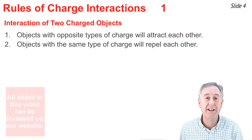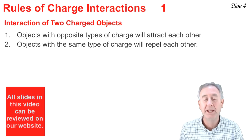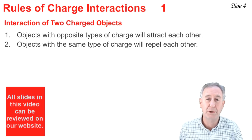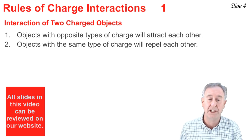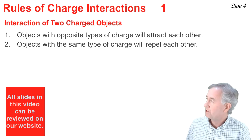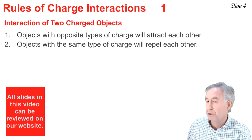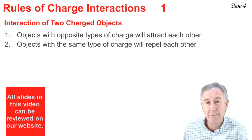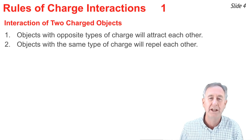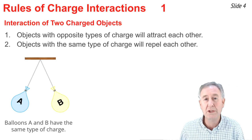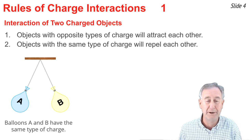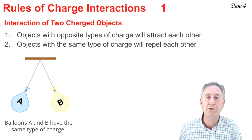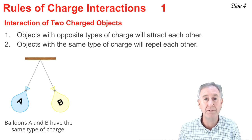You may have heard the saying that opposites attract and likes repel. This describes the first two of three rules regarding charge interactions. Objects that have the opposite type of charge will attract one another, and objects that have the same type of charge will repel one another. This diagram shows balloons A and B hanging from the ceiling, pushing away from one another — they're repelling one another.